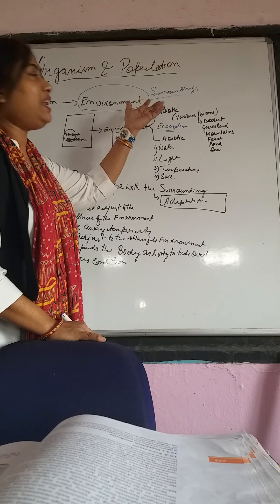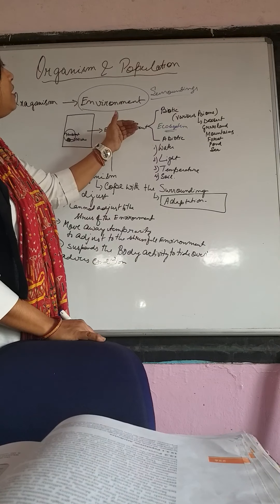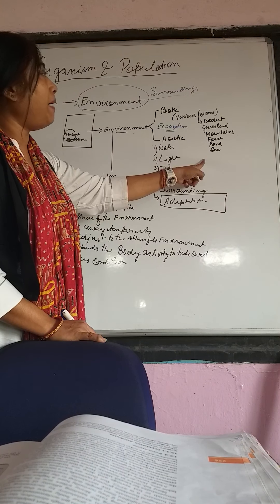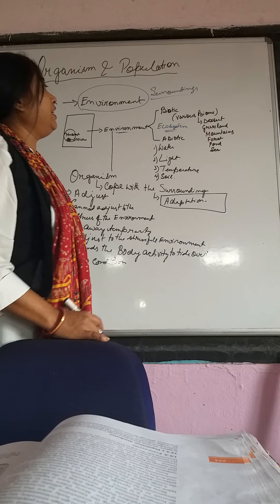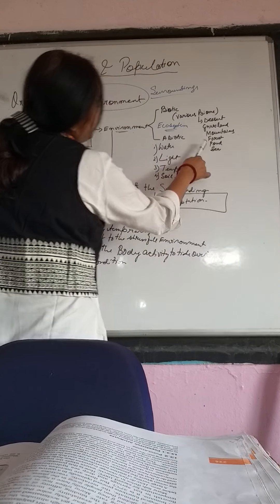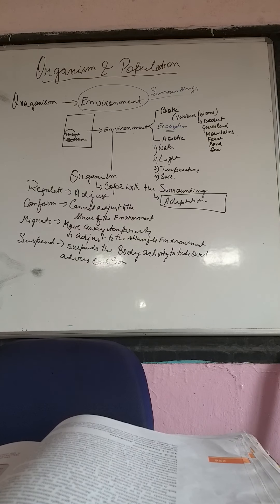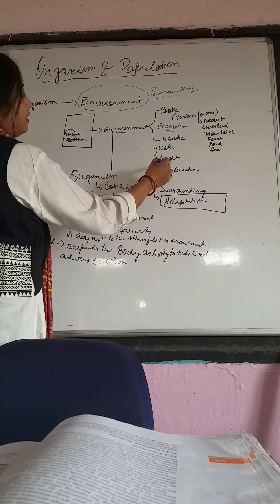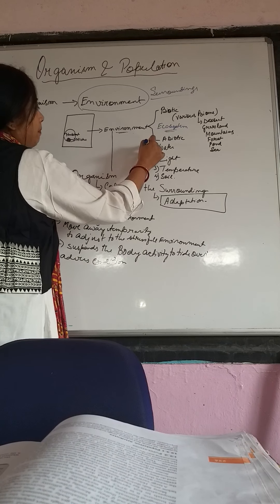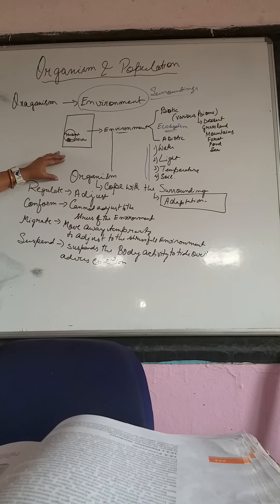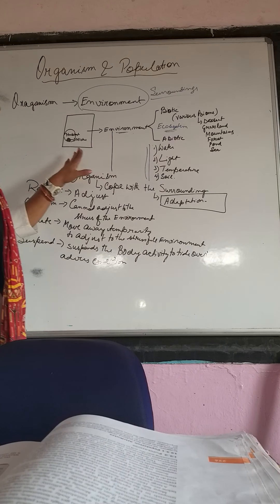Biotic means the living part. The ecosystem includes various biomes based on geographical conditions — you may have a desert area, a grassland, a mountain, a forest, a pond, or a sea. The abiotic factors are water, light, temperature, and soil. These abiotic factors play a very important role in the life of the organism and help it to cope with the surrounding.